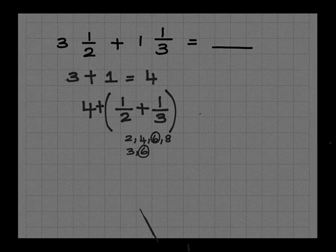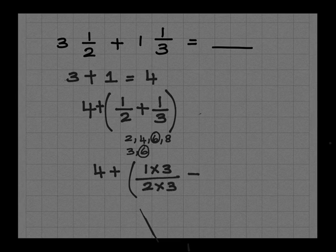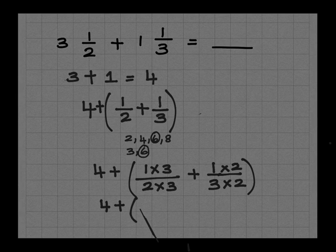4 plus 1 times 3 by 2 times 3 plus 1 by 3 times 2. Okay, so 4 plus 1 times 3 is 3 by 2 times 3 is 6, plus 1 times 2 is 2 by 3 times 2 is 6.